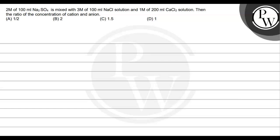Hello Bacho, let's see this question. The question says 2 molar of 100 ml Na₂SO₄ is mixed with 3 molar of 100 ml NaCl solution and 1 molar of 200 ml calcium chloride solution. Then the ratio of the concentration of cation and anion is — options are: half, 2, 1.5, and 1.